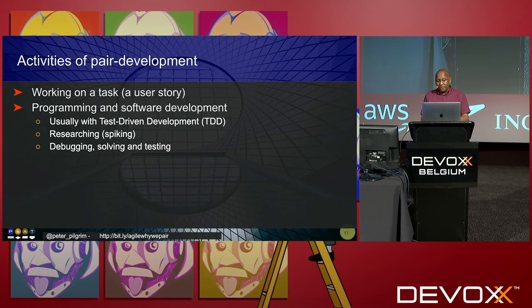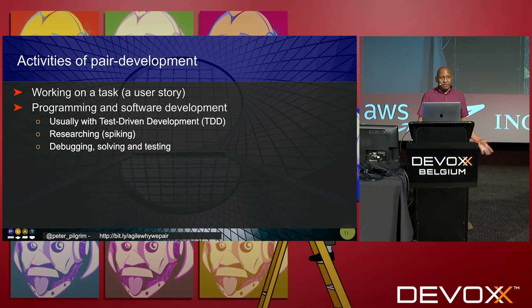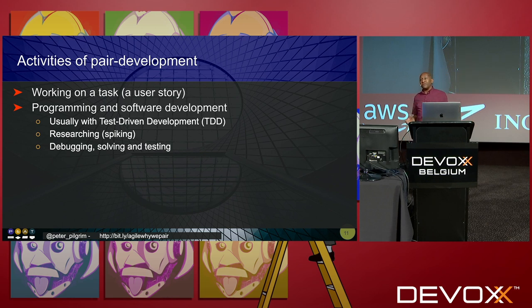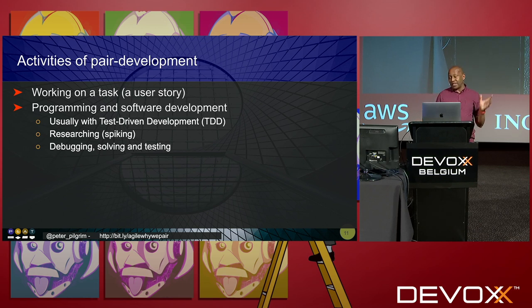The benefits of peer development: one pair works on a user story or task. If you do Scrum, Kanban, or Lean, you understand JIRA tasks and moving stories left to right. Peer development is strongly associated with XP — extreme programming — and test-driven development. But I've also seen it used in DevOps, when there's a production issue and you go to a war room to solve problems with message queues, Cloud Foundry, and debugging.